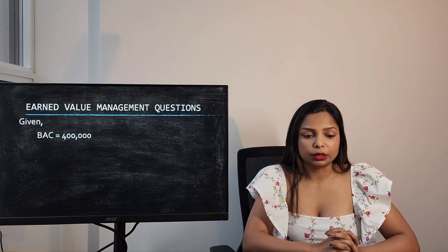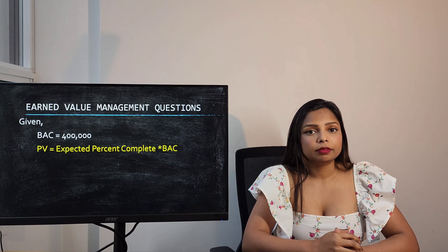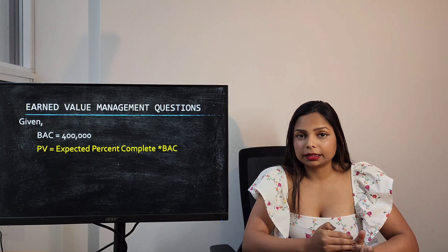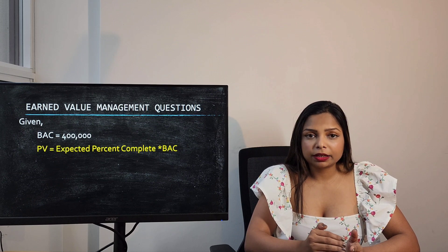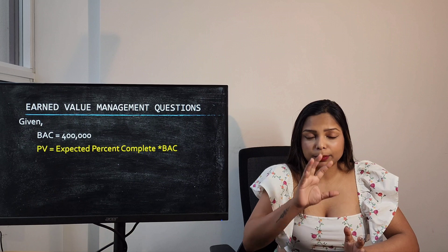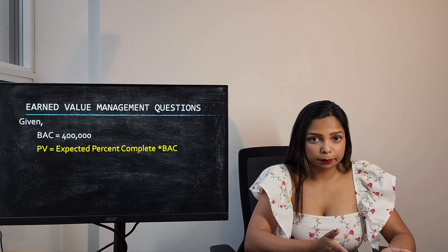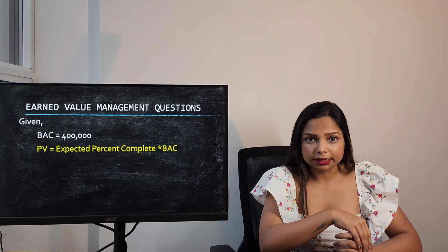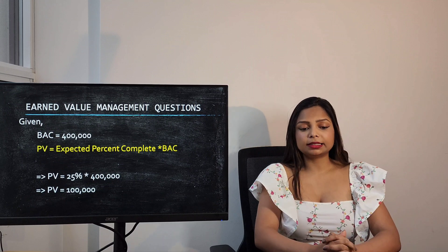The next part is to calculate Planned Value. The formula is expected percent complete multiplied by BAC. The project is supposed to last 12 months with equal work each month, so at month 3 the expected percent complete is 25%. Therefore, Planned Value is 25% multiplied by $400,000, which gives $100,000.